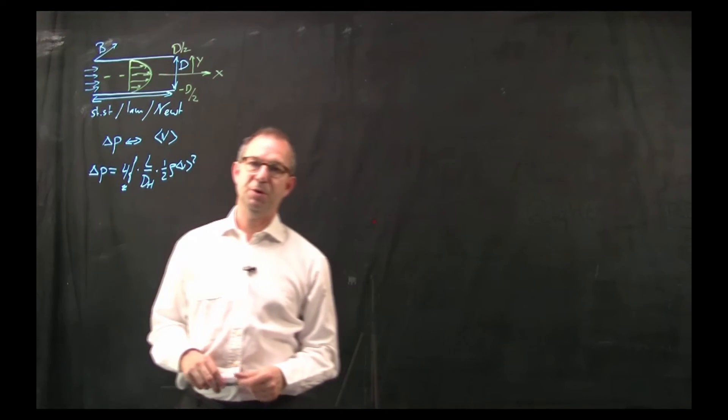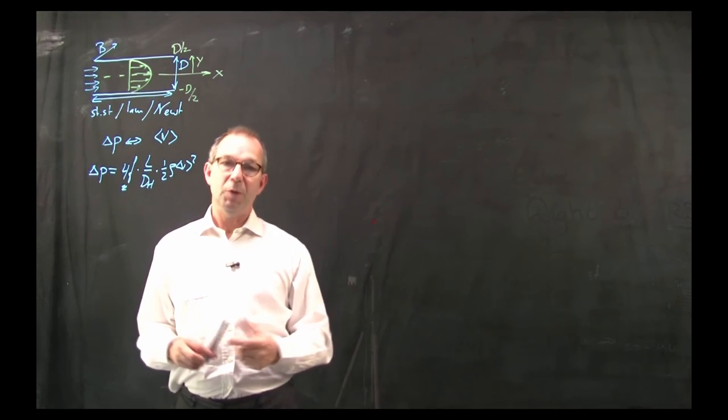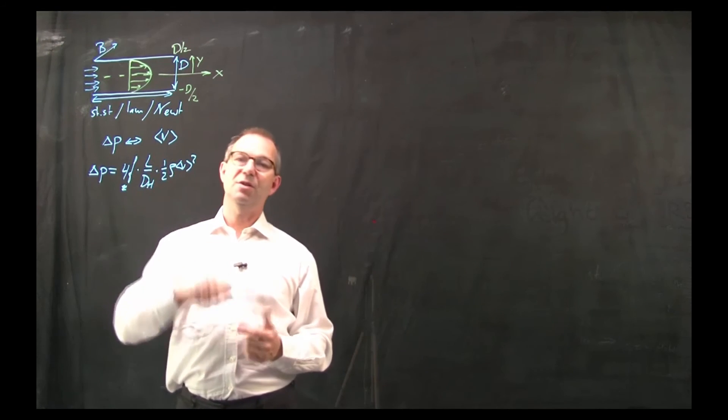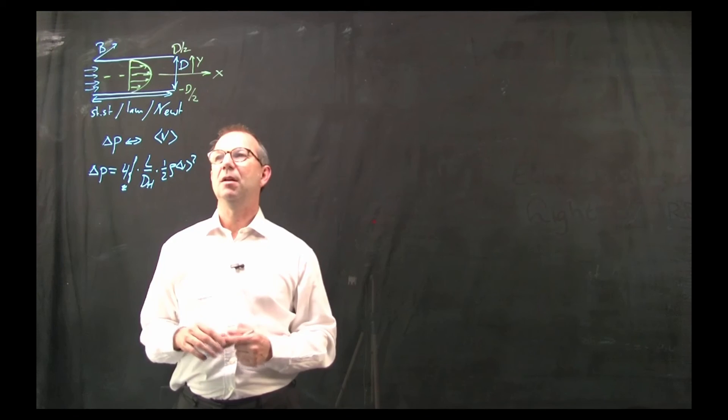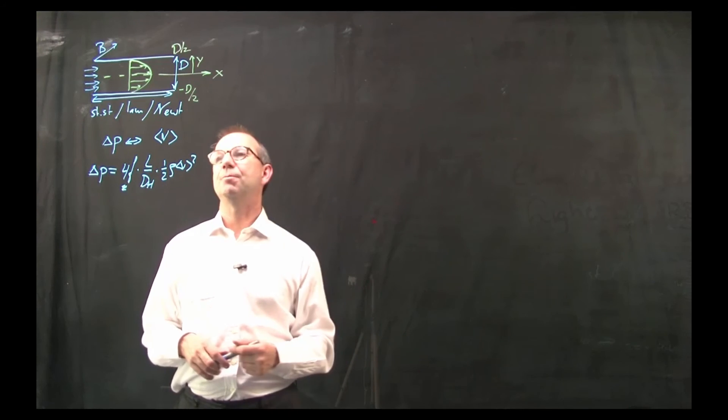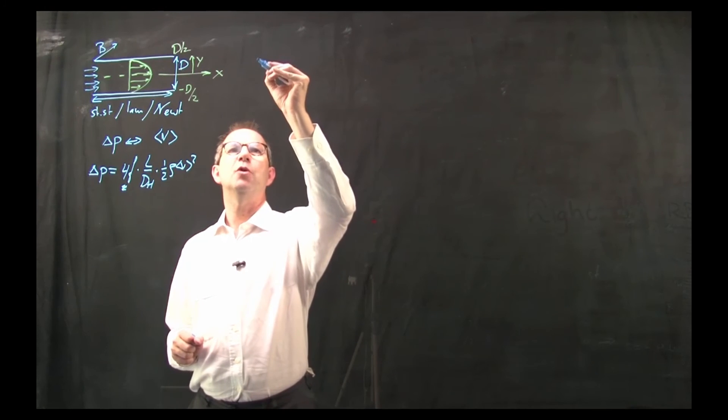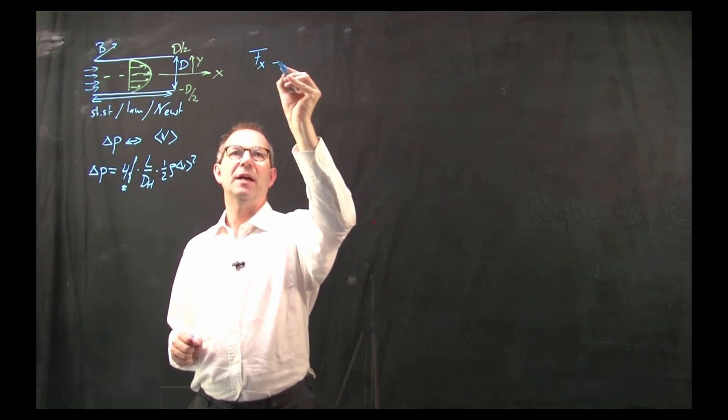To find the distribution of the velocity, we know what to do: set up a steady state momentum balance which boils down to a force balance for these type of geometries. And thus I have a force balance in the x direction.